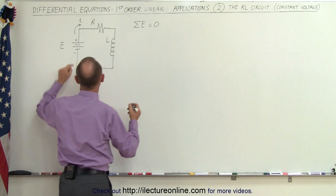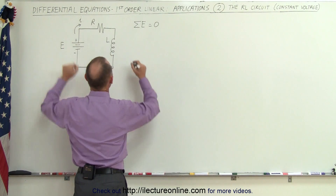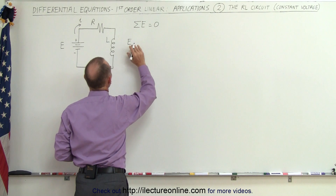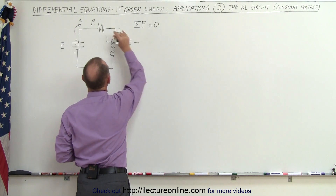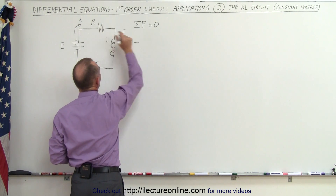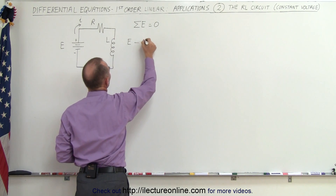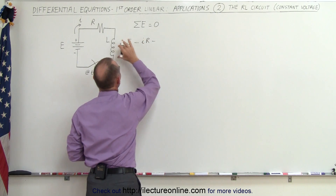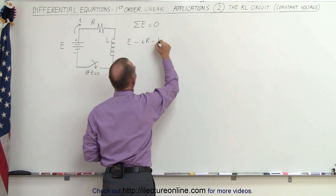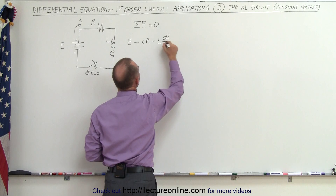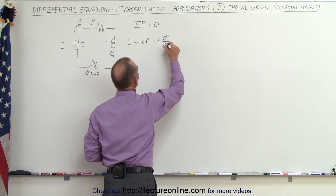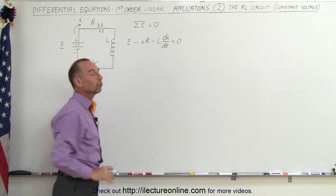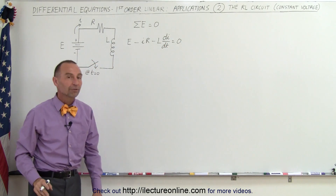The voltage from the battery — the voltage rise — minus the voltage drop across the resistor, which is I times R, minus the voltage drop across the inductor, which is L times dI/dt. When we sum them all up we should get zero, and that's the equation we're trying to solve.